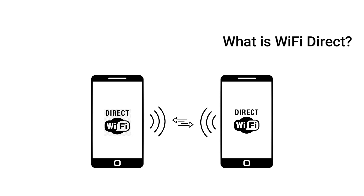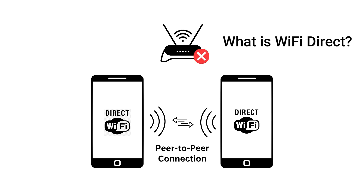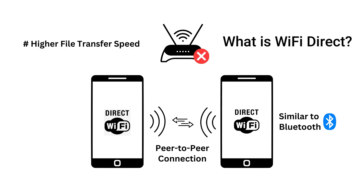Wi-Fi Direct is a technology that allows two Android devices to establish a wireless connection without requiring a Wi-Fi router. It is a direct peer-to-peer connection similar to Bluetooth. However, the advantage of using Wi-Fi Direct over Bluetooth is that the file transfer speed is significantly higher, and Wi-Fi Direct can interact with nearby devices at a range beyond the capabilities of Bluetooth.